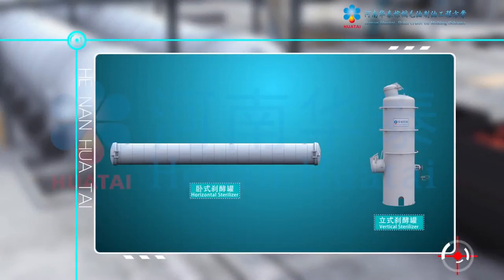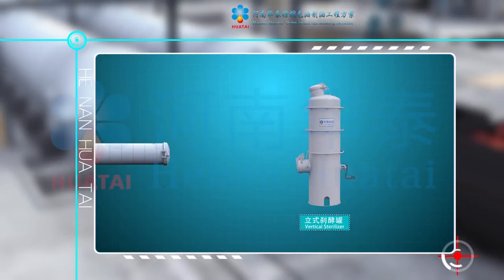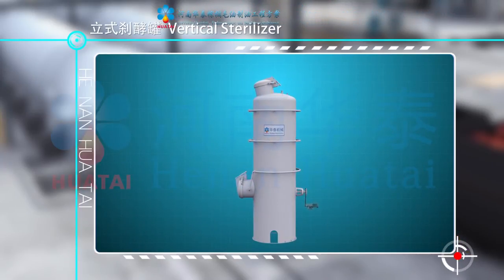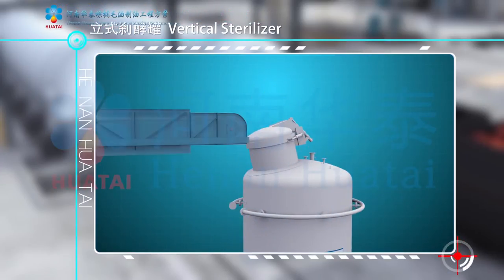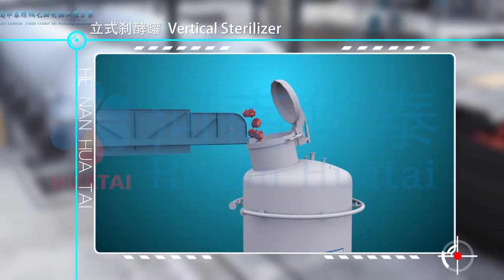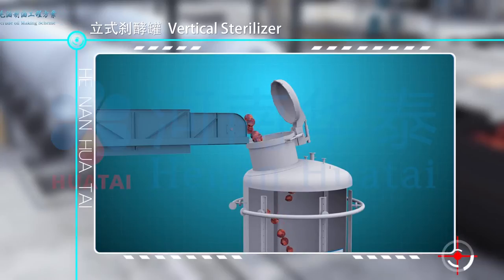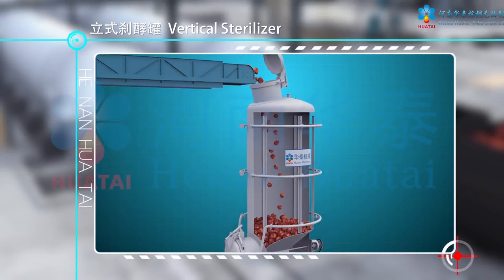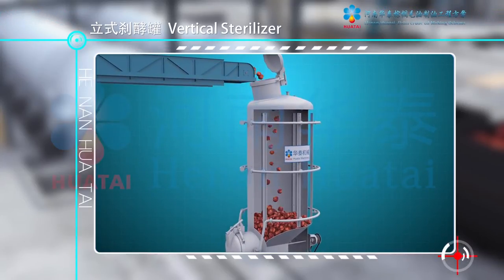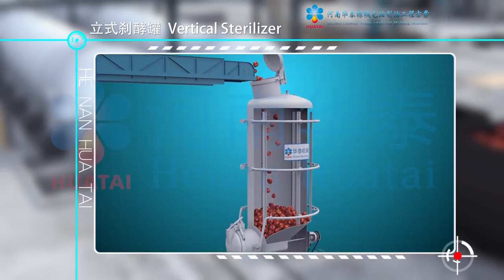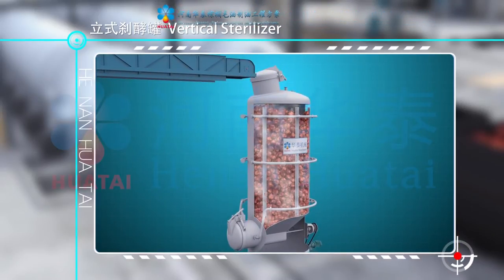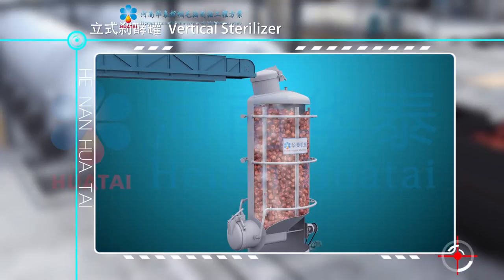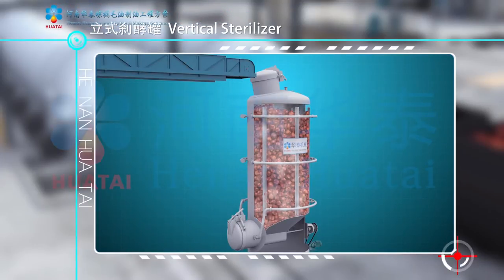The sterilizer is divided into horizontal and vertical types. Taking the vertical sterilizer as an example: a scraper conveyor conveys and distributes fresh fruit bunches inside. Filling starts with steam to sterilize palm fruits under a certain temperature and pressure.